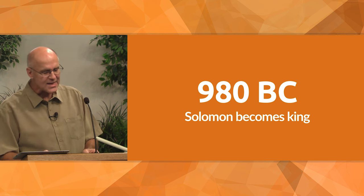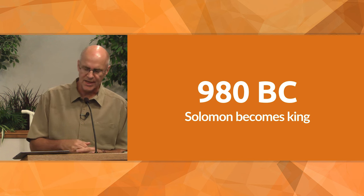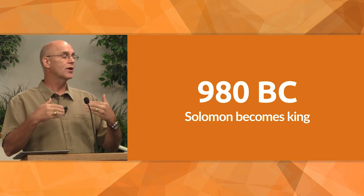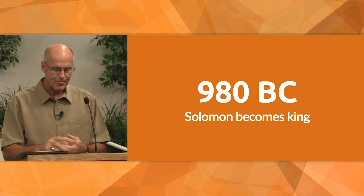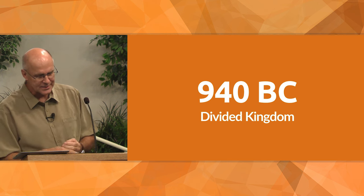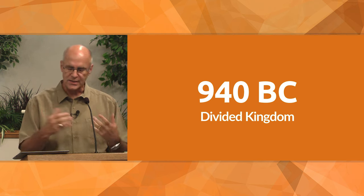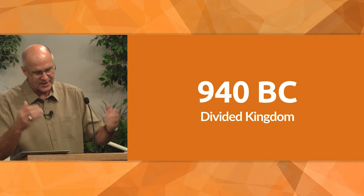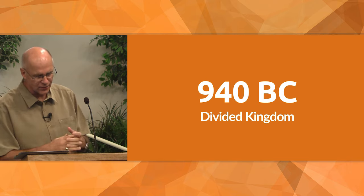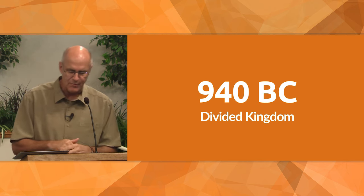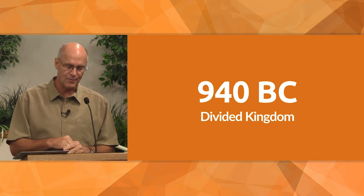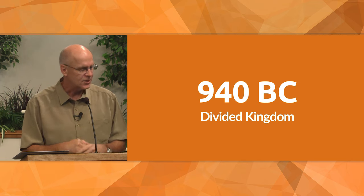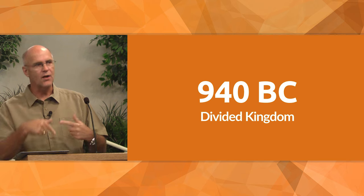And then in 980 BC, Solomon becomes king, David's son. For 40 years Israel enjoys a golden period of peace and prosperity during which the temple is built in Jerusalem. After Solomon dies and the kingdom is divided in two, there was a civil war between his son and others. The northern kingdom was made up of ten tribes, with Shechem, then Penuel, then Tirzah as its capital. And the southern kingdom was made up of two tribes with the capital of Jerusalem. Strangely enough, the north was called Israel and the south was called Judah.